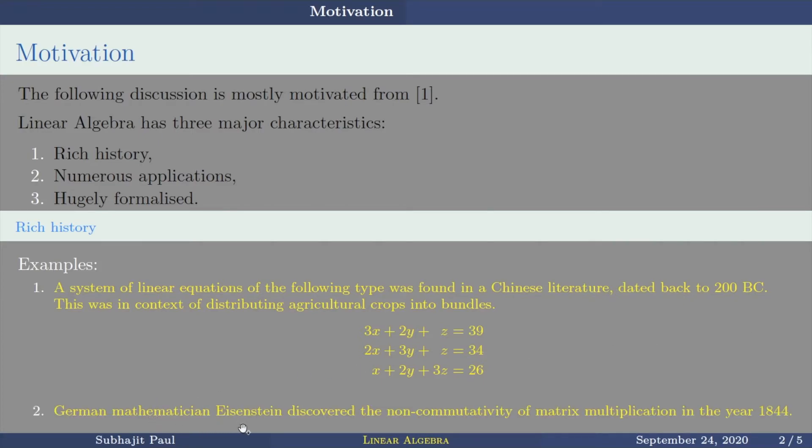The German mathematician Eisenstein, not Einstein, Eisenstein discovered the non-commutativity of matrix multiplication in the year 1844. So you understand that 2044 years, a gap is there. So this subject is being studied from that prehistoric age till now. You know this one, the matrix multiplication is not commutative. A times B is not same as B times A. That thing was discovered in the year 1844 only, so recently.